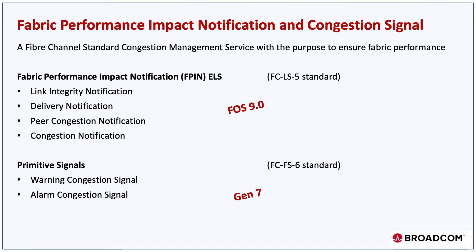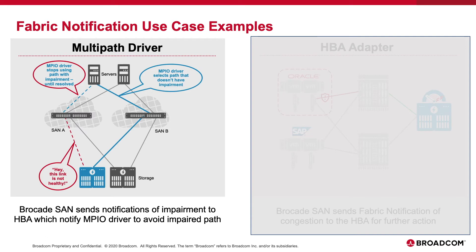Now, let's take a look at two different use case examples to illustrate how this works. In the first example, there is a link integrity issue detected in the fabric, and notification is forwarded to FPIN subscribing devices using the link. In this situation, the HBA will forward that information to the MPIO layer, and the MPIO driver can then make an informed decision to no longer use that link, and therefore avoid any performance impact from a link which is not healthy.